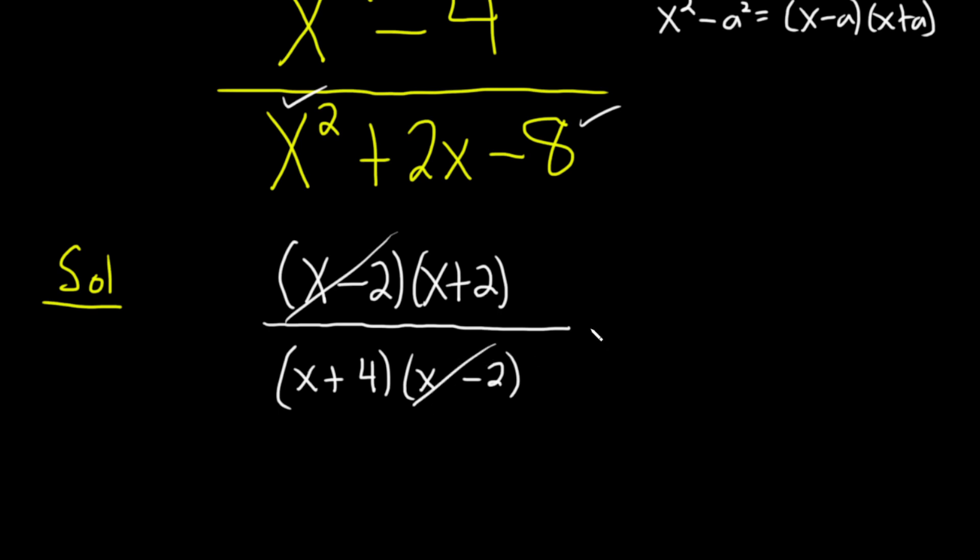Oh look, x minus two cancels. We're left with x plus two over x plus four. And that's going to be the final answer in this particular case.